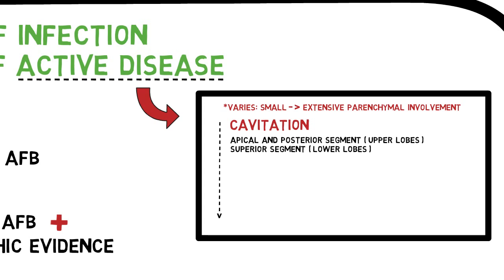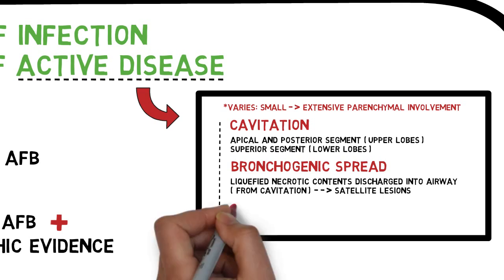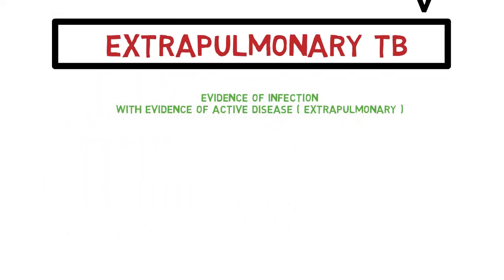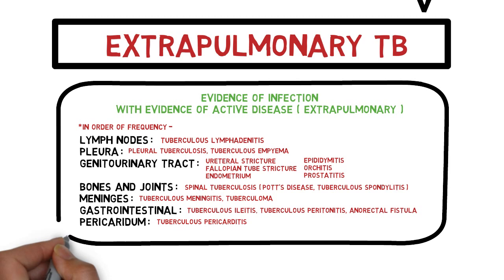The cavitation can erode into bronchi and cause bronchogenic spread to other airways, and when other foci cause cavitation elsewhere, they can coalesce causing caseating pneumonia. In roughly 45% of patients, extra-pulmonary TB develops without pulmonary involvement — these patients are generally non-infectious. Manifestation varies by site; in order of frequency: lymph nodes (most common), pleura, genitourinary tract, bones, joints, meninges, gastrointestinal system, and pericardium.